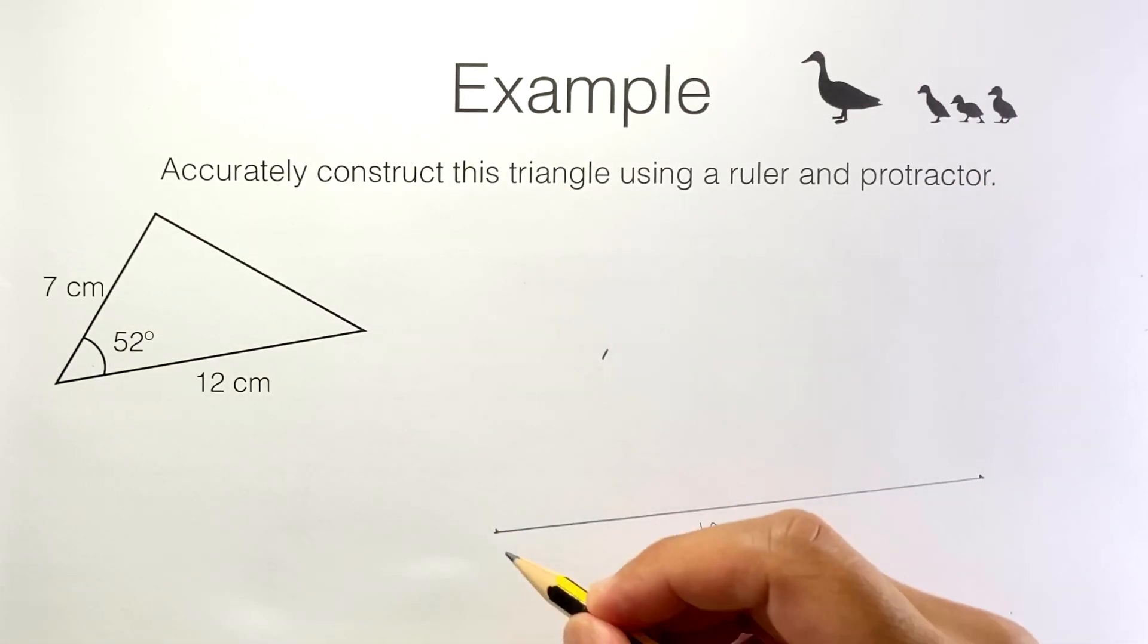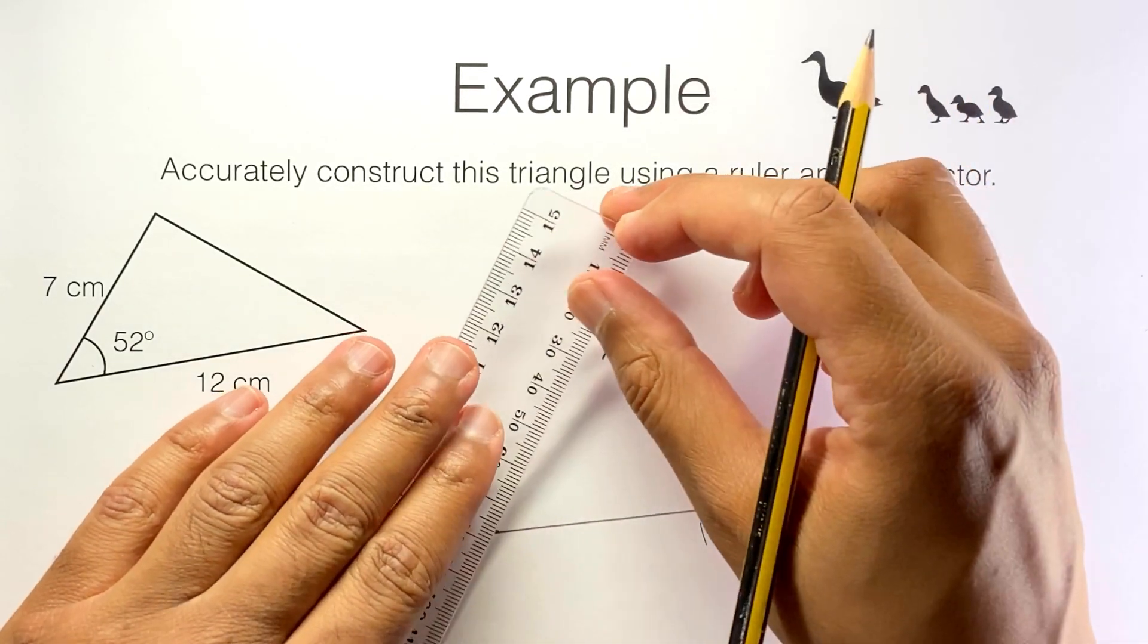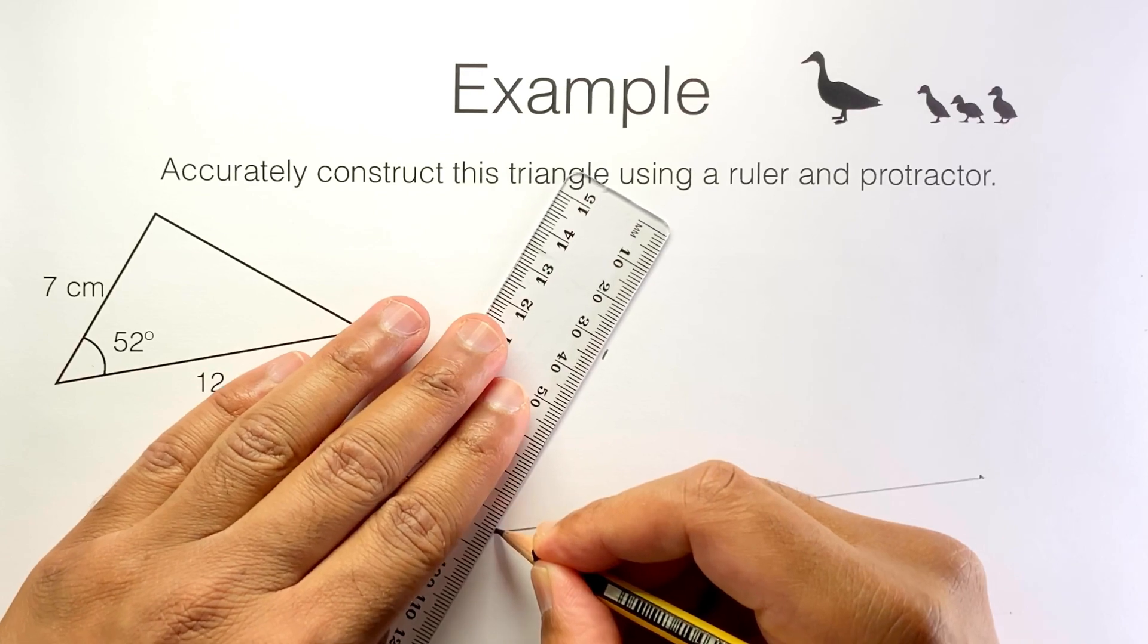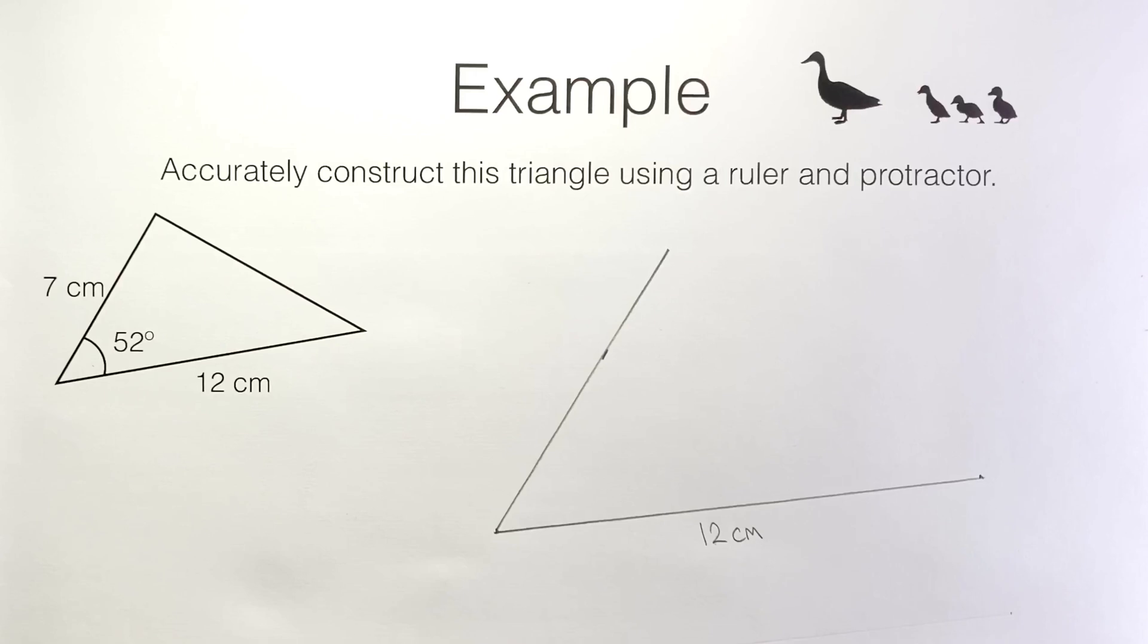Now I join this vertex to this mark. I draw quite a long line. I don't need to worry about measuring seven centimetres just yet. I draw quite a long line because it's easy for me to do that first and then come back later and measure out the seven centimetres we need.